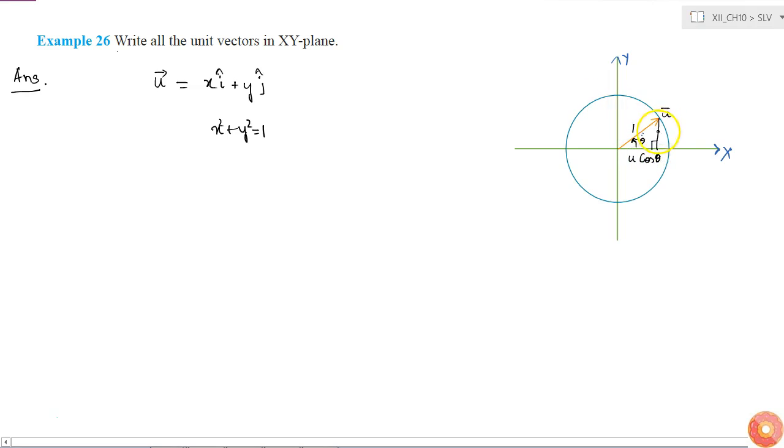So I can write u also as u equals u cos theta is along x direction, so u cos theta—sorry, it is one cos theta. So it will be just cos theta and just sin theta. So I can write it as cos theta into i cap plus sin theta into j cap.